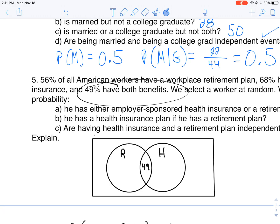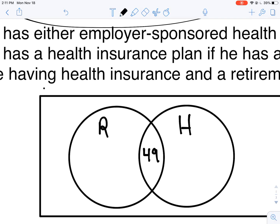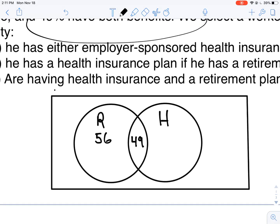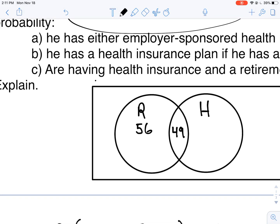So now they know both. They tell me 56% of American workers have a retirement plan. Now remember when they tell you that, there's no only involved in here. They're not saying that they only have a retirement plan, they can have health insurance. So I'm gonna take away that 49, which gives me 7.